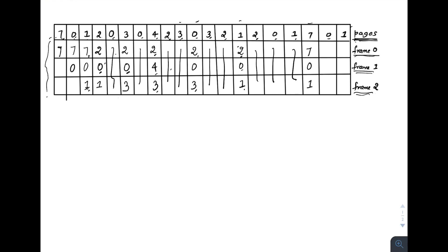Page two is already in main memory — no page fault. Page zero is already there — no page fault. Page one is already there — no page fault. Page seven is not in main memory. Among the current pages, page two has no future references, so replace two with seven. Frames become: seven, zero, one. Then zero and one are already present — no page fault.